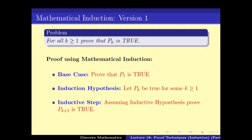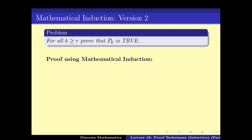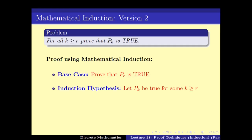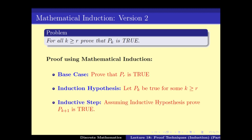There is another version — Version 2 — for the case where we want to prove that for all k greater than or equal to R, Pk is true. Here we simply shift the base case: we prove PR is true, and then the inductive step proves PR+1 from PR, which allows us to conclude that for all n greater than or equal to R, the problem Pn is true.